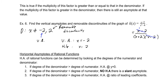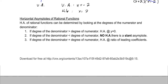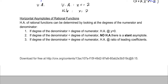For horizontal asymptotes, we have three cases based on the degrees of the numerator and denominator. If the denominator degree is greater than the numerator, horizontal asymptote is at y equals 0. If the denominator degree is less than the numerator, there is no horizontal asymptote but there is a slant asymptote. If the degrees are equal, the horizontal asymptote is at the ratio of the leading coefficients.